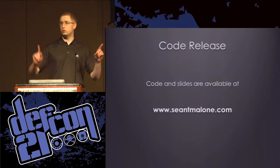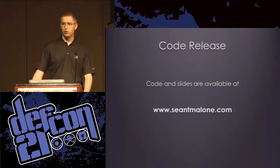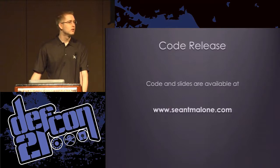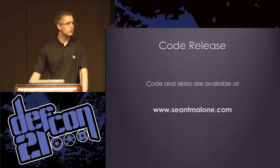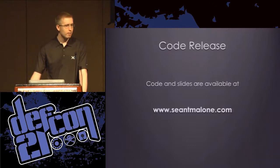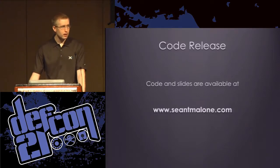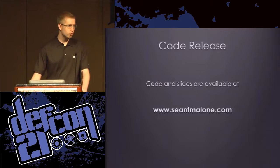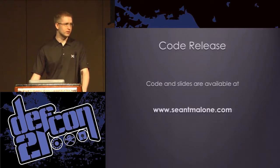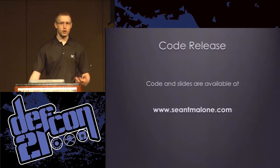Question: What happens if the three-letter agency seizes your system while it's still operating and connected to the net? If they take it offline, replication fails. But if they're able to take control of the operating system while it stays online, then they would be able to rebuild the file. So you want to take normal physical security measures to make it as difficult as possible for them to take control without actually unplugging the system or disconnecting it from the network.